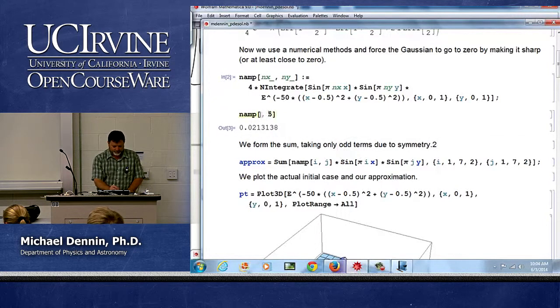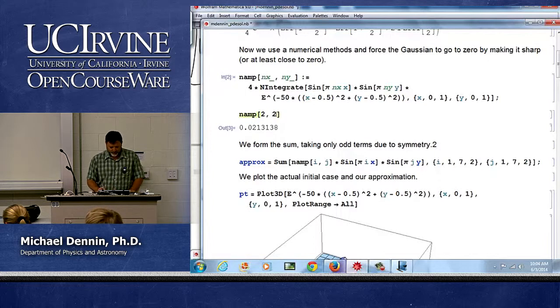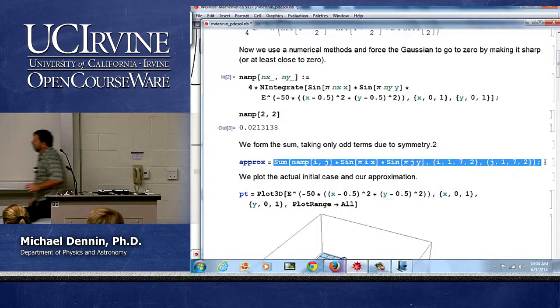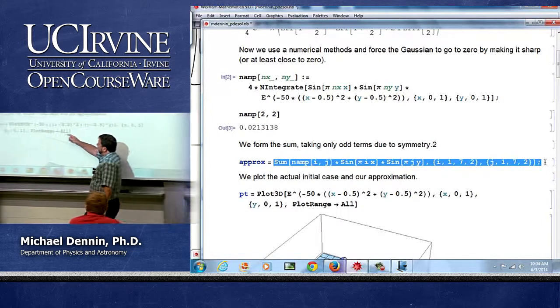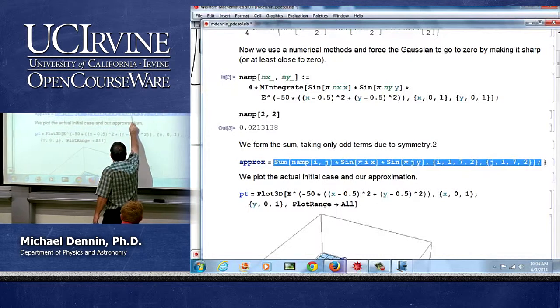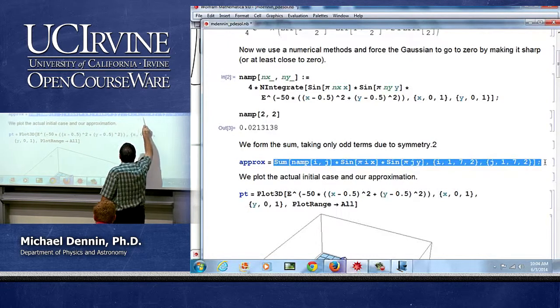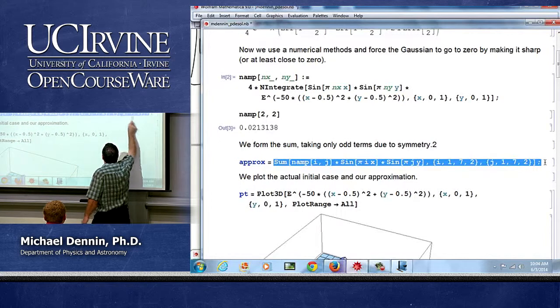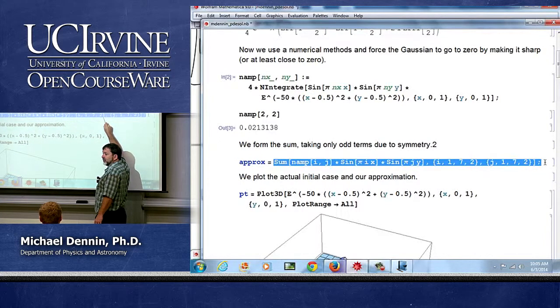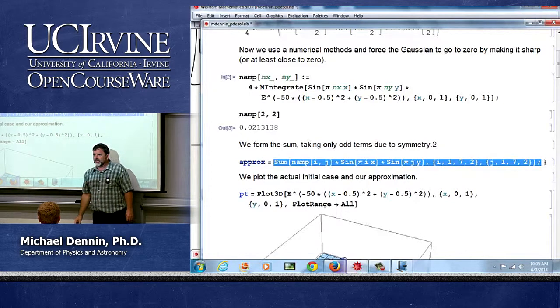The next thing I did was I went ok, we're going to do a series. Notice in Mathematica it's pretty easy to do, I just sum my amplitudes times sine pi, and notice I'm going from 1 to 7 and what's this 2 telling me? Increments of 2. Why am I skipping the even ones?